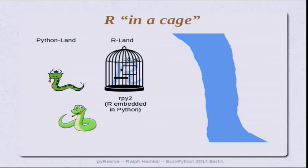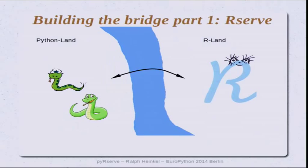RPy2 has a slight disadvantage for us: R runs in the same process as Python, or even on the same machine. In our case, Python was running a web application server, and when we wanted to do heavy analysis in R, that was really slowing down our web server. So we had to spread R out onto a different machine, and that's the approach I'm going to talk about.